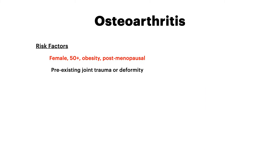With that said, the risk factors should make sense. Your test is probably going to give you what's shown here in red. The patient will likely be female, age 50 or older, with obesity, and probably post-menopausal. These are the main risk factors for osteoarthritis. Lower yield, but worth knowing: if a joint has pre-existing trauma or deformity, it's more likely to develop osteoarthritis, as that abnormality makes the joint more susceptible to inflammation.